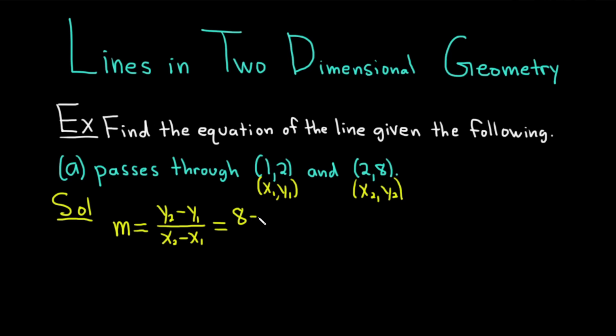So it'll be 8, minus, and then y1 is 2. And that's divided by x2 is 2, and then minus x1 is 1. I really think it's important to label things like this. It helps you avoid errors. So it's 8 minus 2 over 2 minus 1. 8 minus 2 is 6, 2 minus 1 is 1. We get 6.